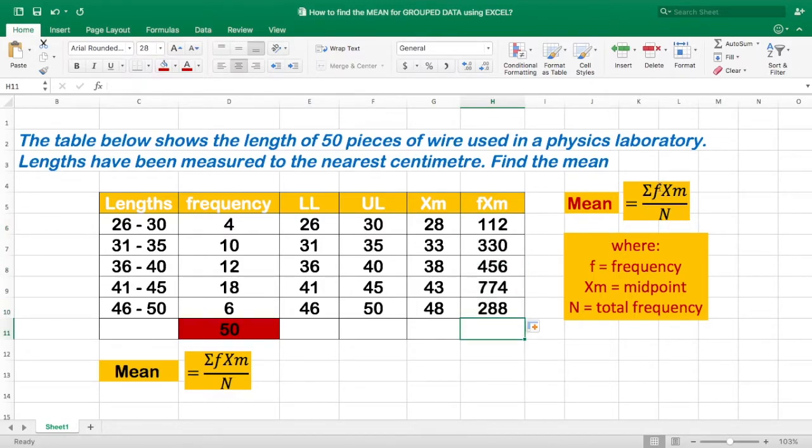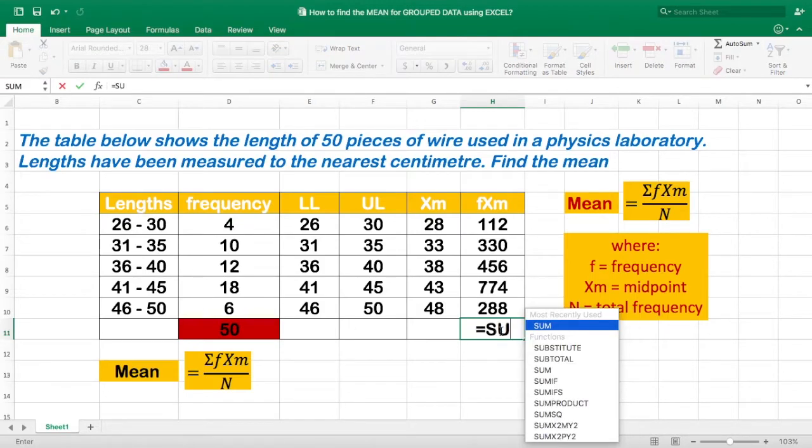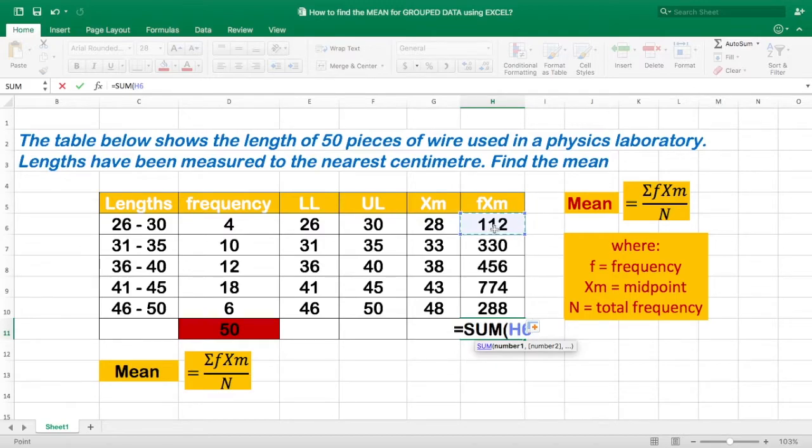So in the formula, we need to find the summation of the product of the frequency and the class mark. So how do we do that? How do we find the sum? Just like what we did here. So this is equal, sum, parentheses, first number,